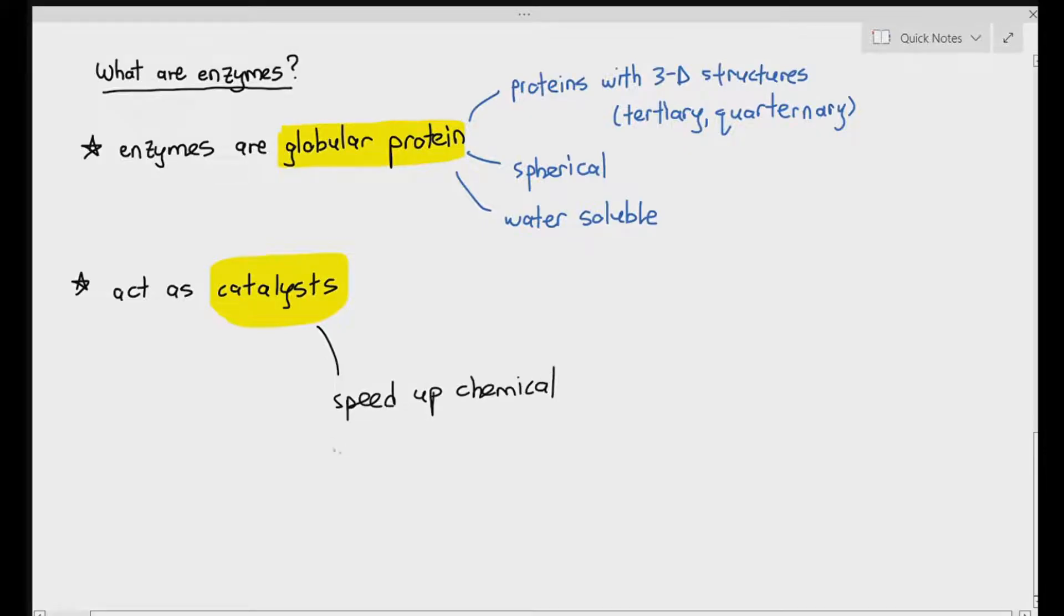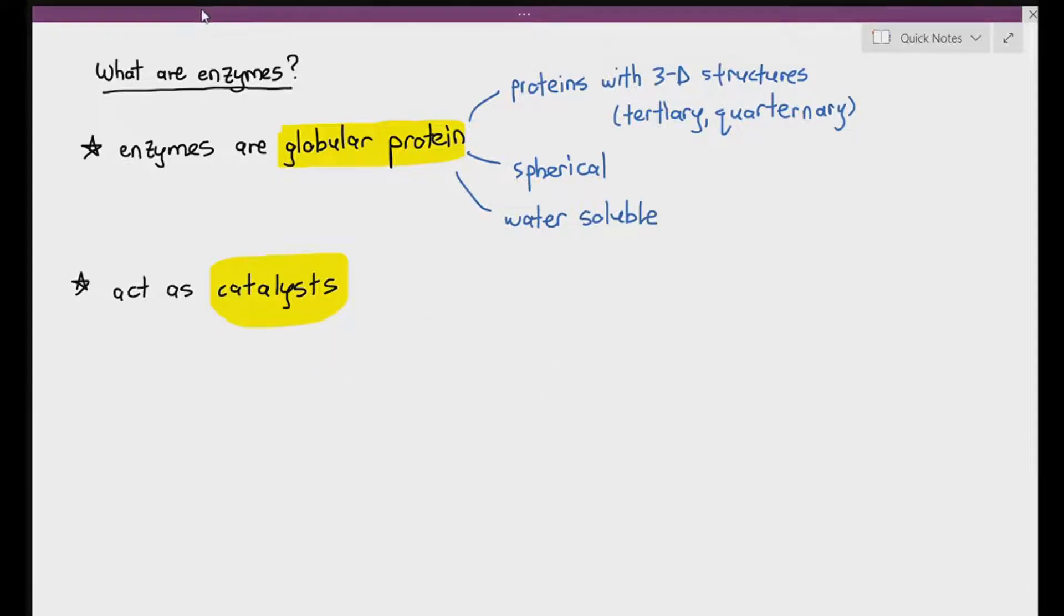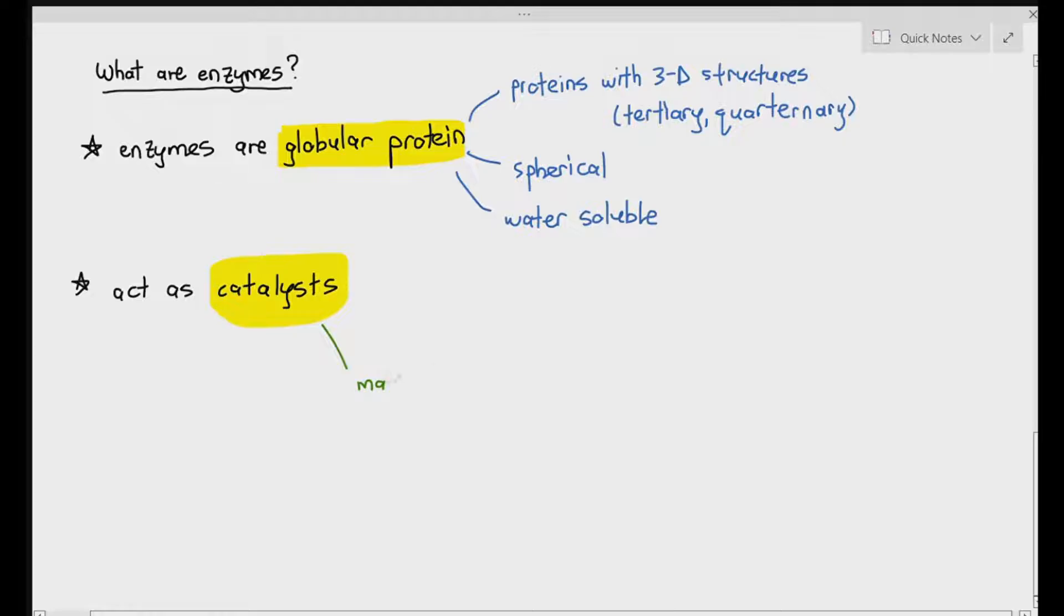And enzymes are basically known as catalysts. Now, what exactly is the meaning of catalysts? So catalysts are just basically molecules or substances which make it easier for a reaction to take place. Let's just understand that as the definition of catalysts for now. I will elaborate on that later but for now, that definition is good enough.